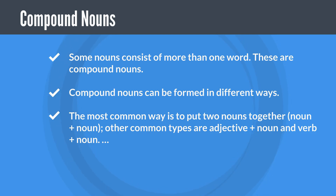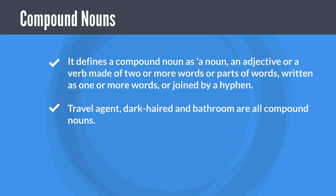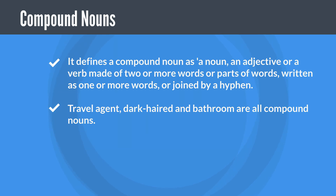Some nouns consist of more than one word — these are compound nouns. Compound nouns can be formed in different ways. The most common way is to put two nouns together (noun + noun). Other common types are adjective + noun and verb + noun. A compound noun is defined as a noun, adjective, or verb made of two or more words or parts of words, written as one or more words or joined by a hyphen.